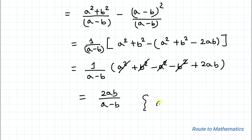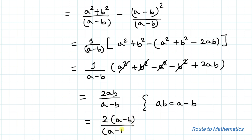From equation 1 we have ab equals a minus b. Substituting again, we get 2 multiplied by (a minus b) divided by (a minus b). The (a minus b) terms cancel out, so our final answer is 2.